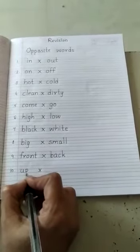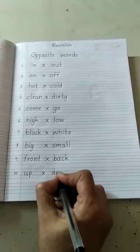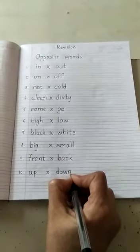And the last one is U P Up. Opposite word is Down. D O W N. Down.